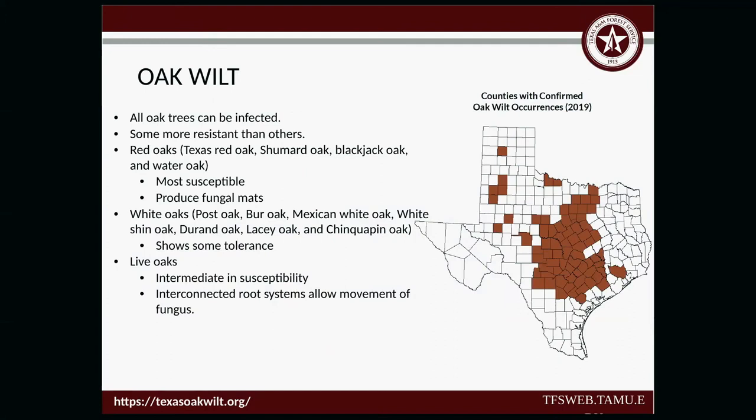Oak wilt — whenever I go meet with landowners, I always feel like the grim reaper giving horrible news. All oak trees can be infected with oak wilt, but some are more resistant than others. Red oaks — which are our Texas red oak, Shumard oak, blackjack oak, and water oak — are the most susceptible. These produce fungal mats. Whenever red oaks get it, they have 100% mortality.